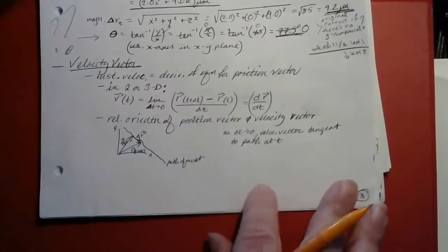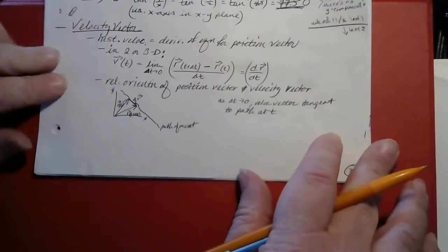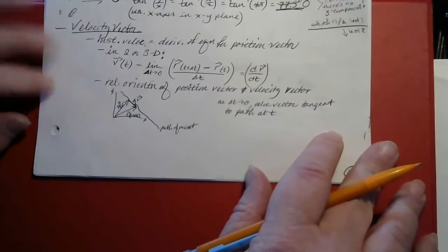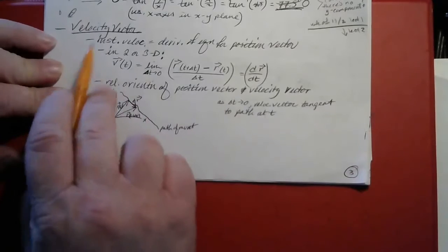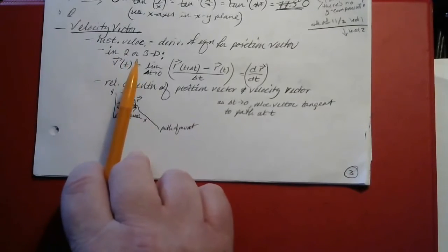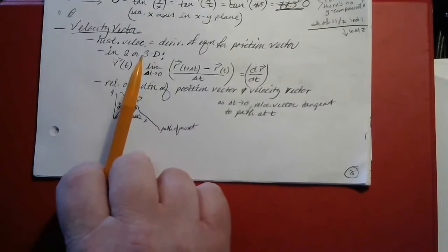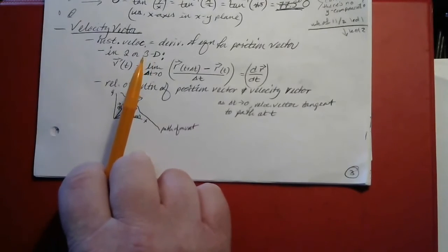To start our second lecture of the week on video, we'll pick up where we left off near the beginning of chapter four, and we're about to talk about velocity vectors. The concept of velocity in two and three dimensions is very similar to that in one dimension, except that vectors are involved, and so that complicates things a little bit. But not too much.